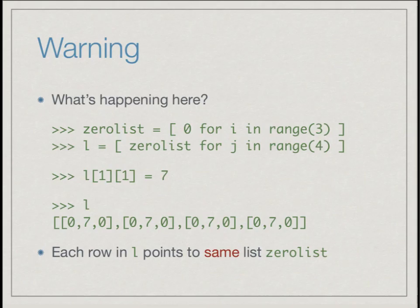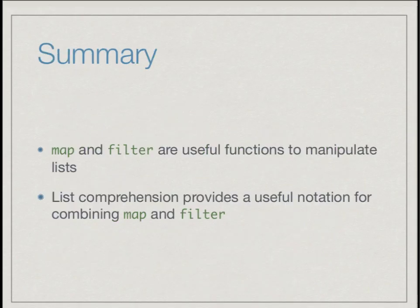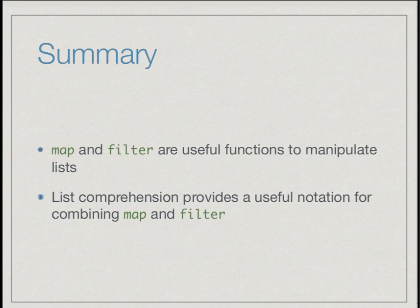To summarize: map and filter are very useful functions for manipulating lists, and Python provides a list comprehension notation — like many other functional programming languages — to combine map and filter. One important use of list comprehension is to correctly initialize a two-dimensional or multi-dimensional list to some default values.